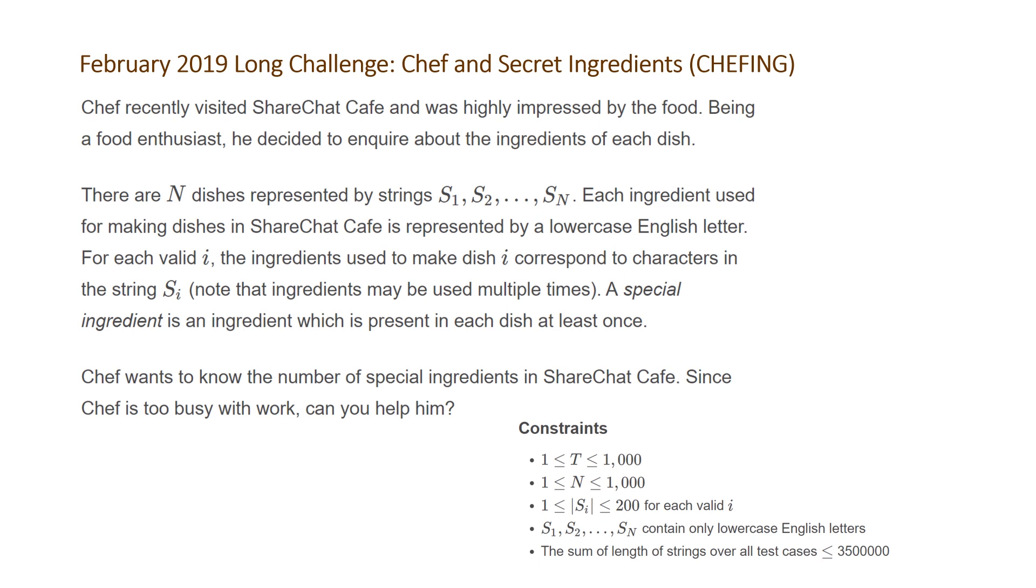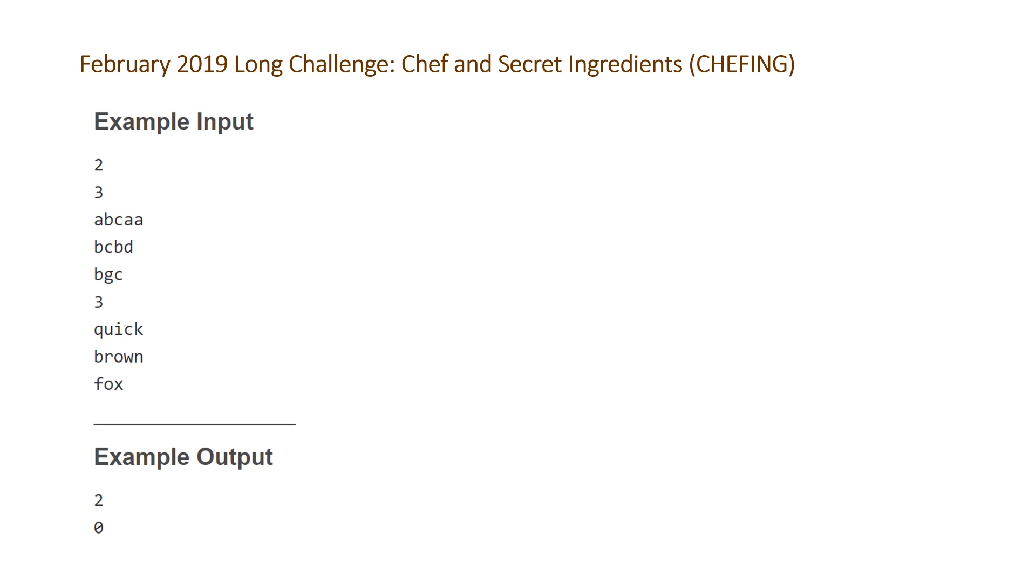Let's take a look at the examples that Code Chef provided. We have two test cases, each containing three dishes. For the first example, the output of the number of special ingredients is going to be two, because we have two ingredients, B and C, that occur at least once in each of our dishes.